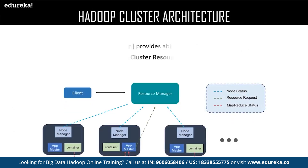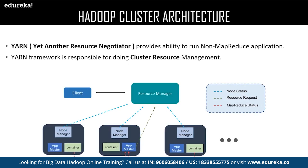Now let us discuss YARN — Yet Another Resource Negotiator. YARN consists of the node manager, app master, and container. The node manager is a Java utility that runs as a separate process from the web logic server, allowing you to perform common operations for a managed server regardless of its location with respect to the administration server. The app master is responsible for negotiating resources between the resource manager and node manager. The container is a collection of reserved resources allocated from the resource manager to work on the task assigned by the node manager.